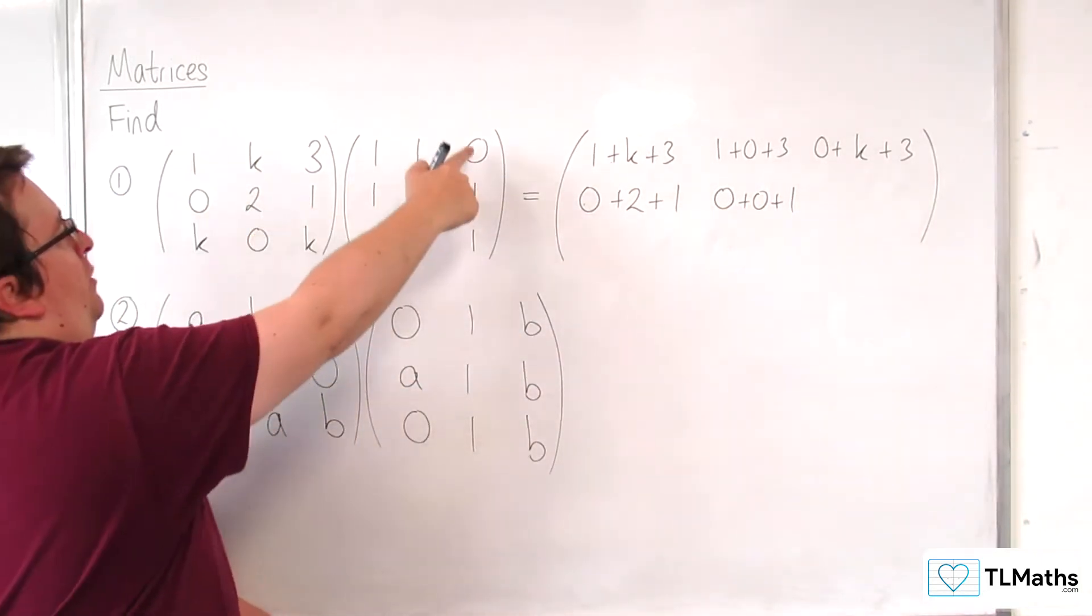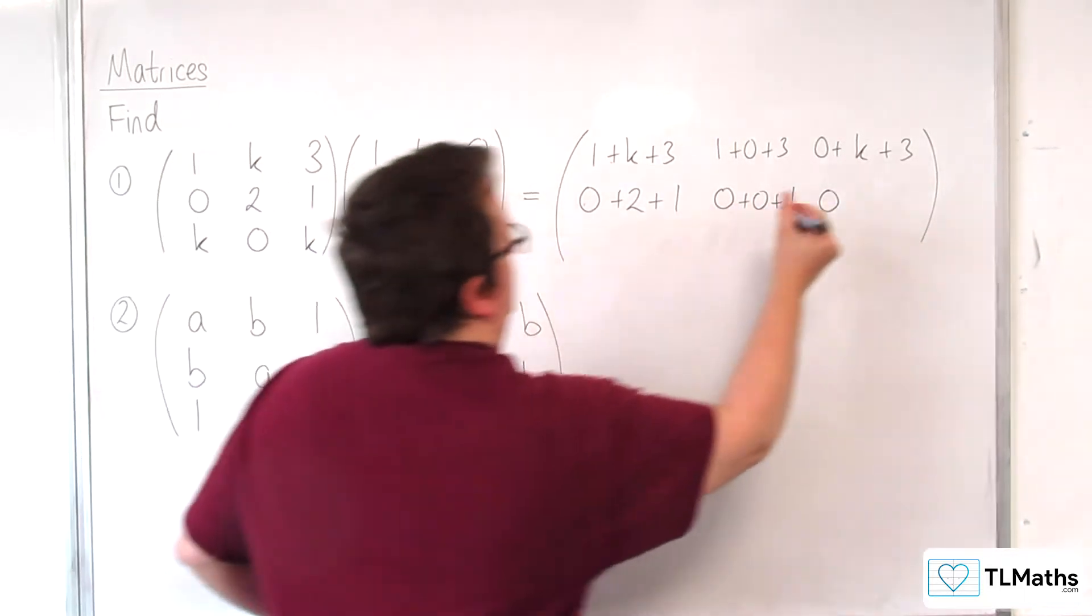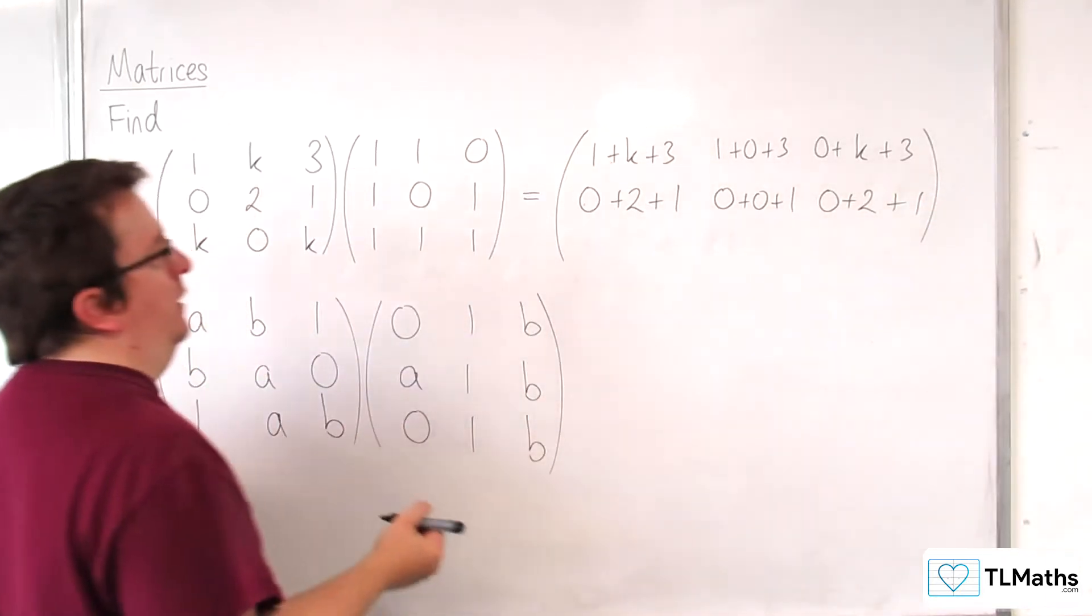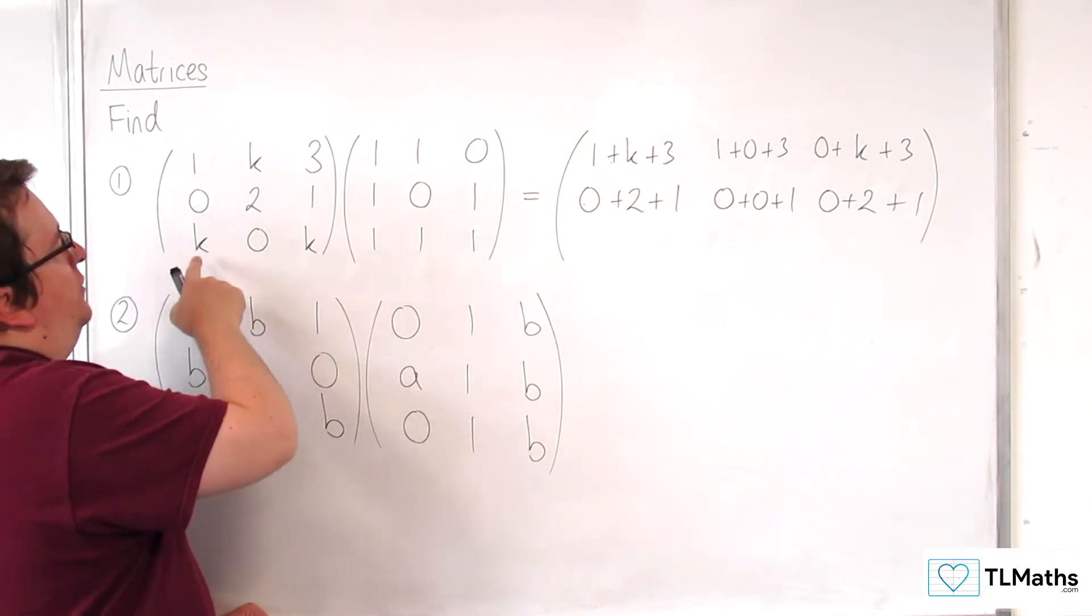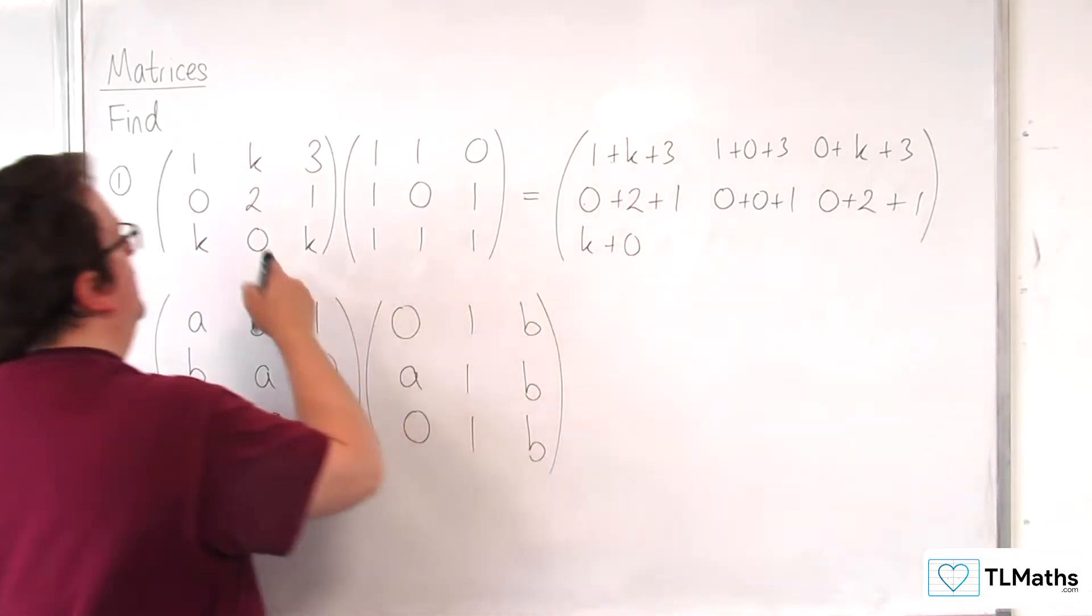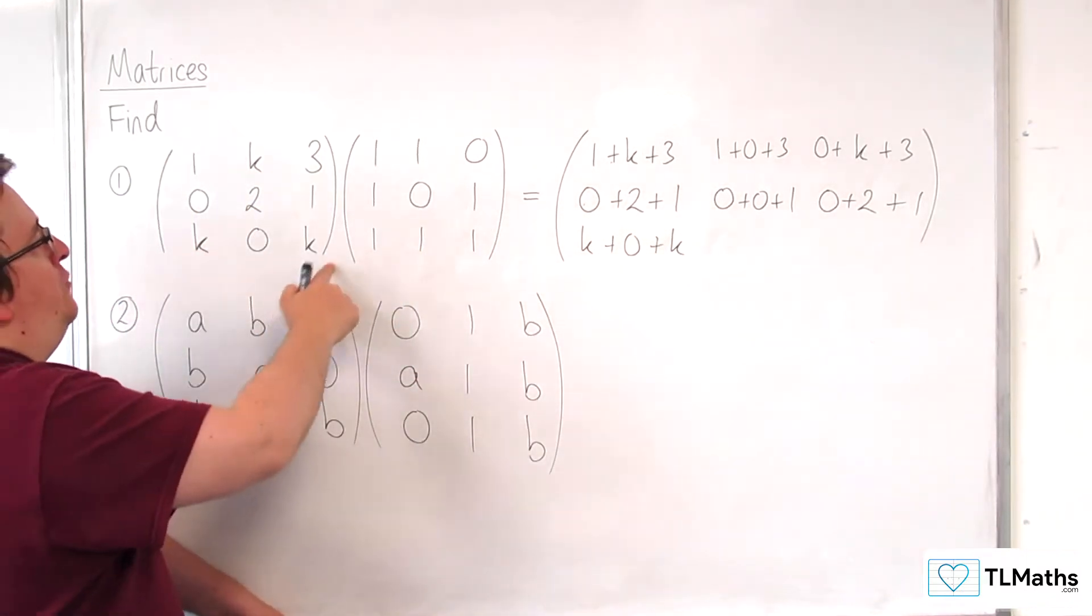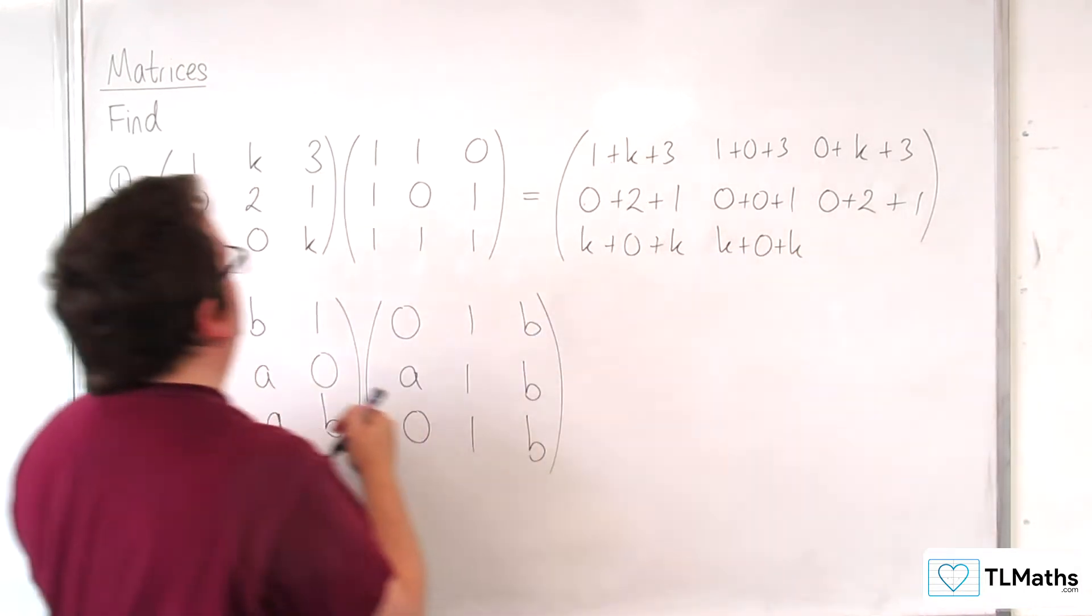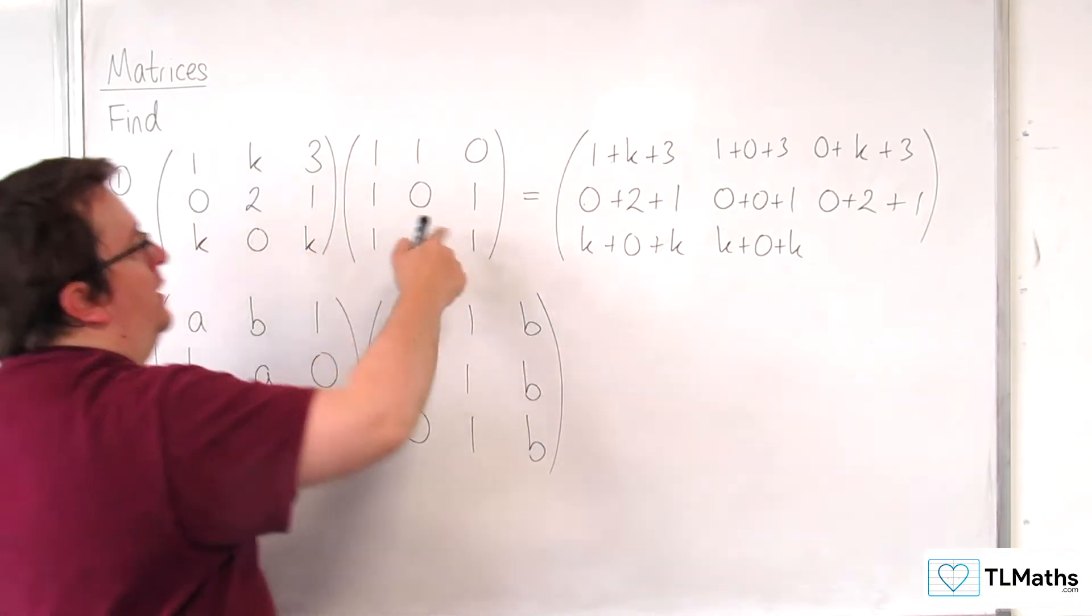And then 0, 2, 1 multiplied by 0, 1, 1, so 0 times 0, 2 times 1, and then 1 times 1. So then finally the bottom row, so k times 1, 0 times 1, and then k0k times that, so we're going to get k plus 0 plus k again. And then k0k multiplied by that, so we're going to get 0, 0k.